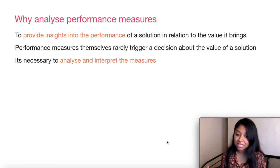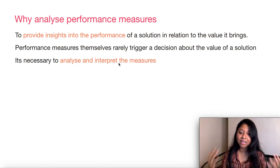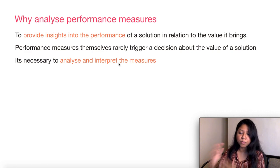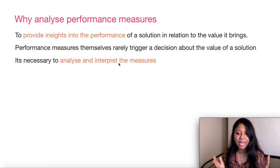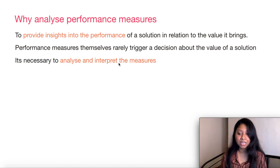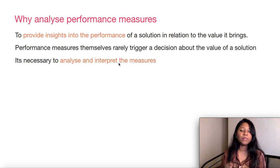Performance measures themselves very rarely trigger any decision about the value of a solution. When you look at a performance measure or KPI, you just don't get enough insights to decide what needs to change or be rectified. You do not get that level of information just by looking at the performance metrics. That calls for the necessity to analyze and interpret that information — to understand what story the data is telling us. That's what we do when we analyze performance measures.